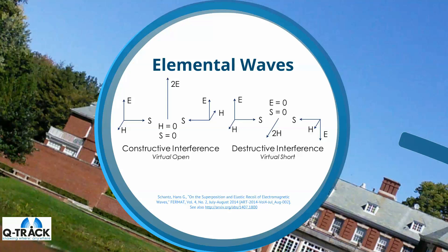Similarly, in the destructive interference case, all the electric energy transforms into magnetic energy. In each case, one or the other of the fields is equal to zero, so the Poynting vector is equal to zero — no power is flowing. The energy is, momentarily, static. So electromagnetic waves interfering with each other in free space can give rise to instantaneous static concentrations of either electric energy or magnetic energy.